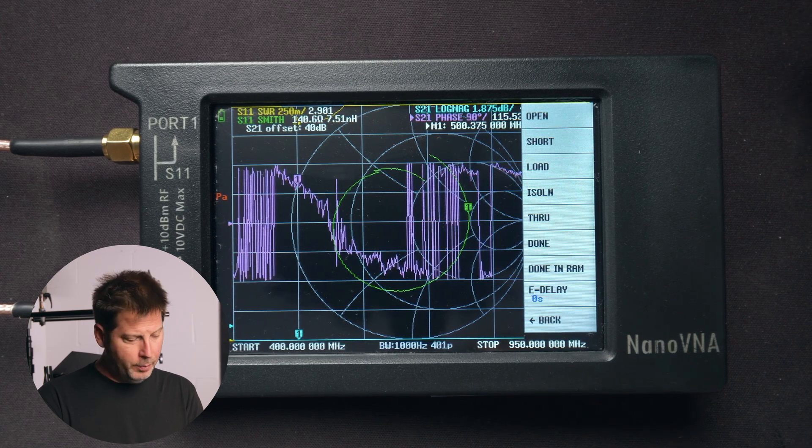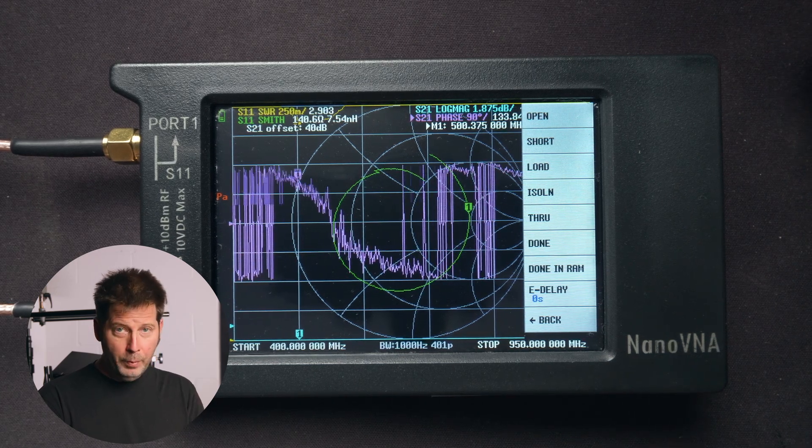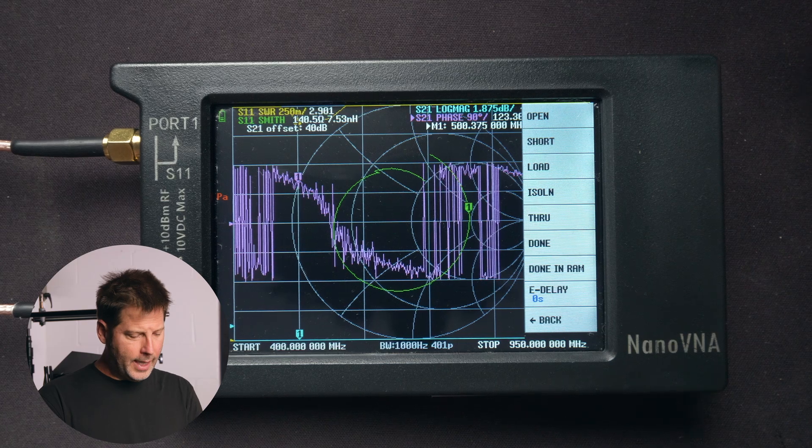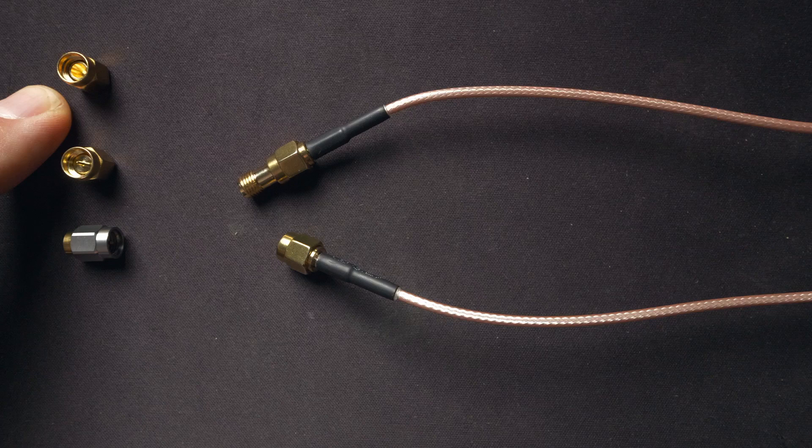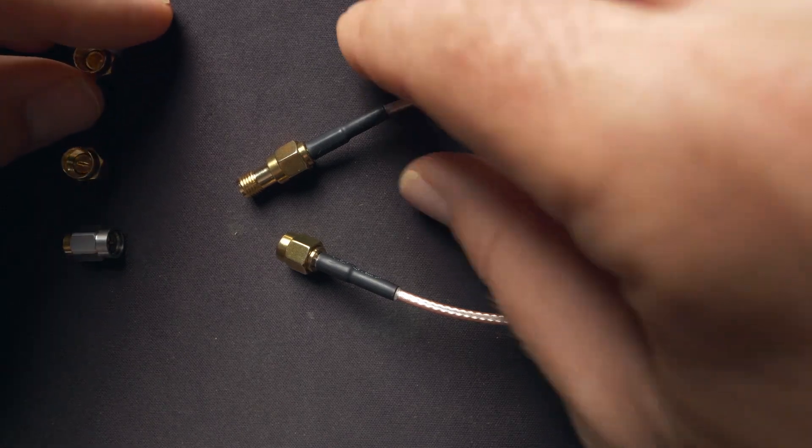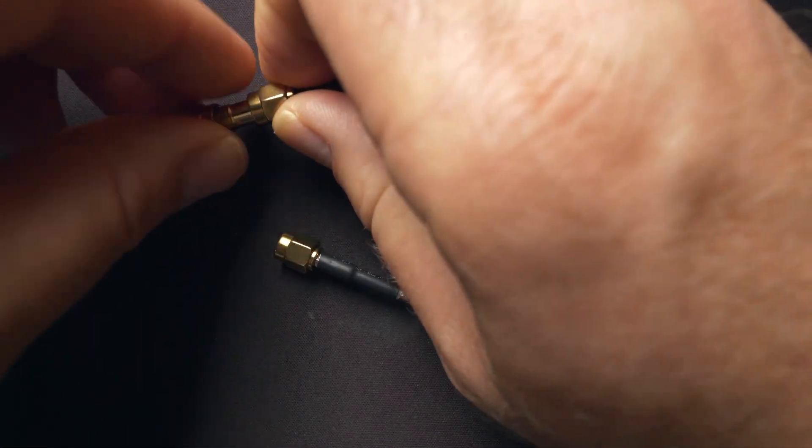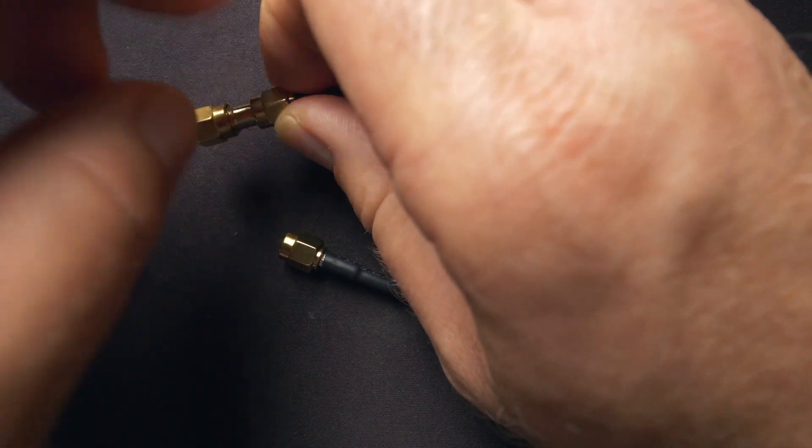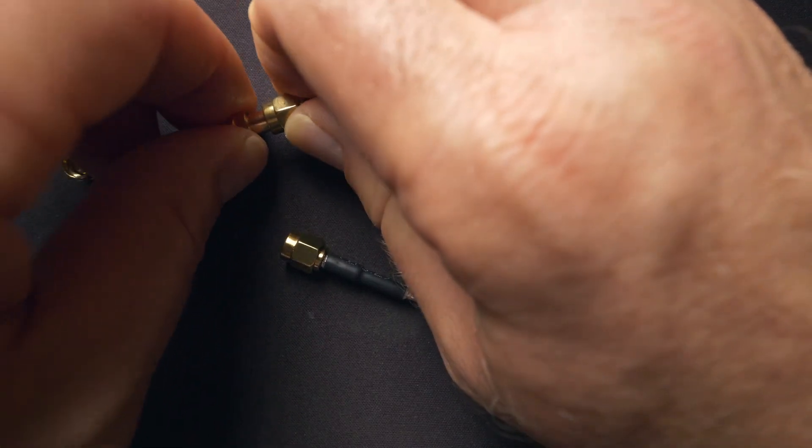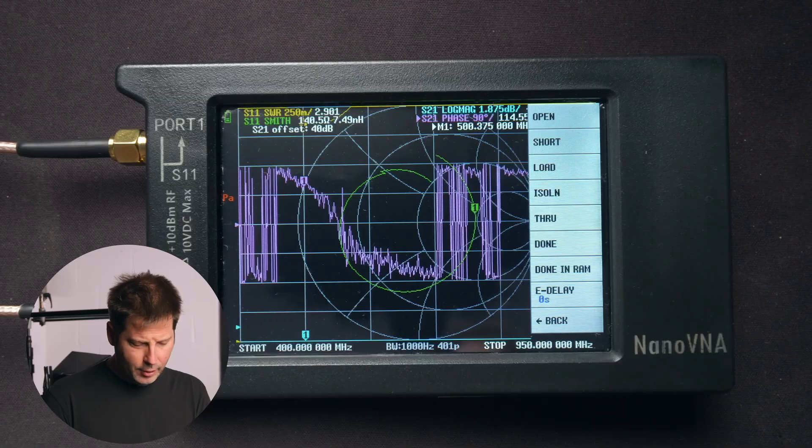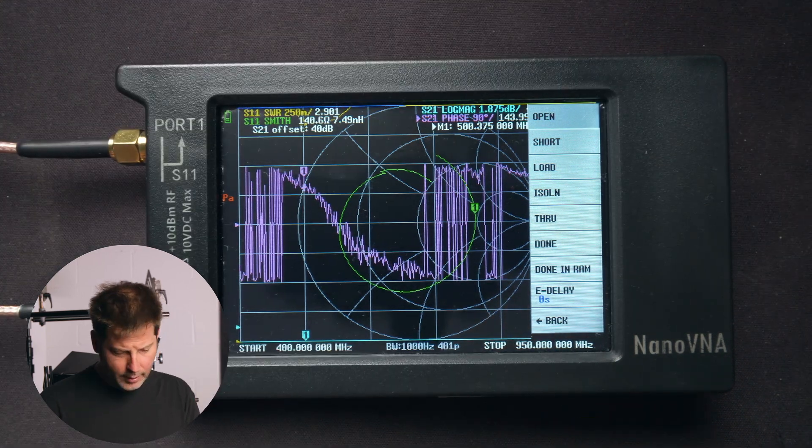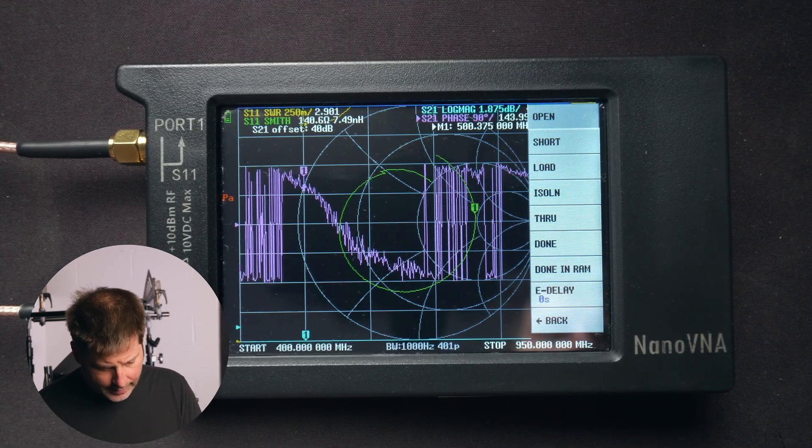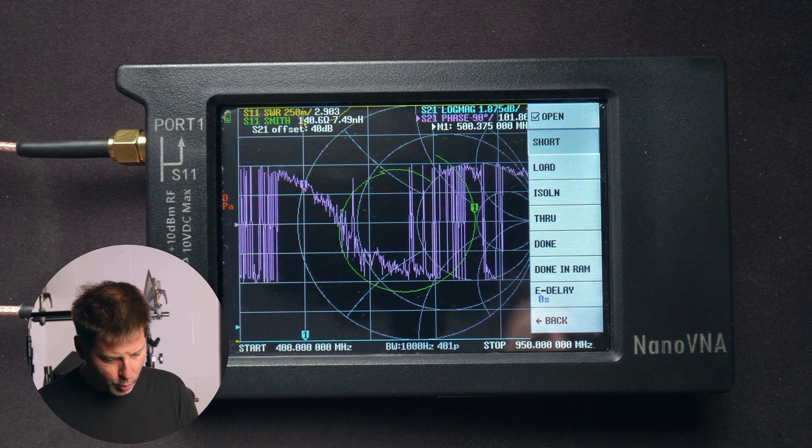So before we press open, we need to connect our open terminal to the S11 port here at the end of our coaxial line. So we'll go ahead and connect that. Now that we've connected that terminal, we'll go ahead and press open, and you'll notice that a blue line goes across the screen, calibrating the open, and then the next one is selected, which is short.